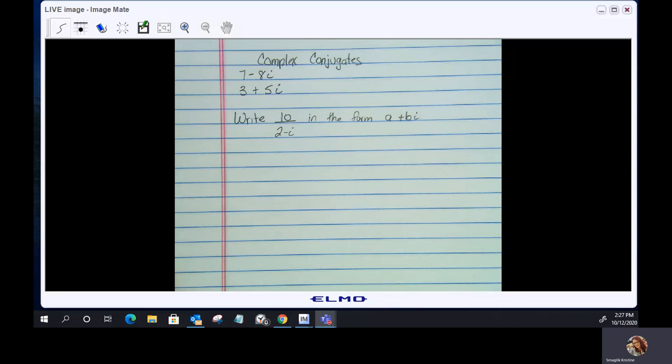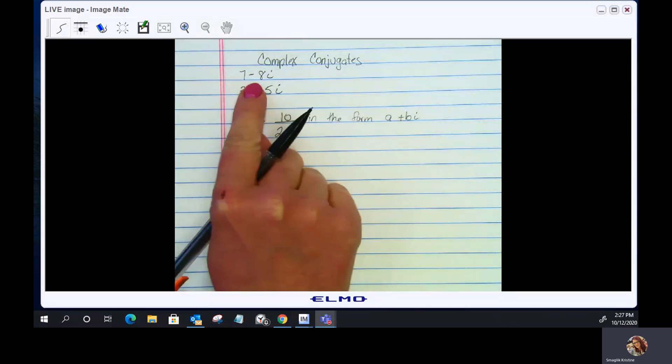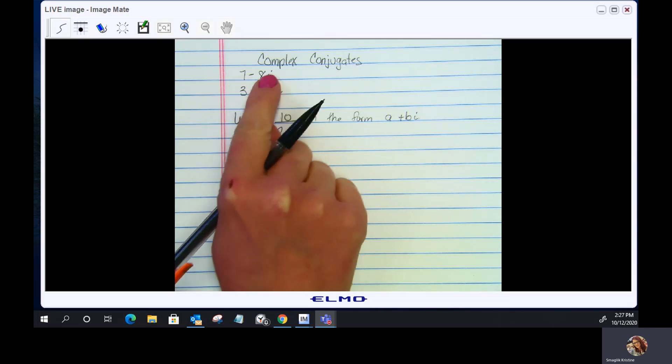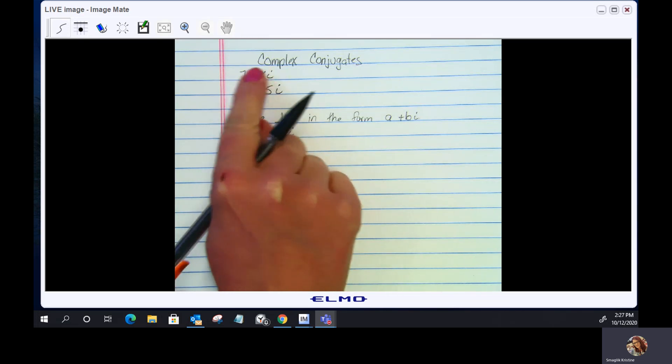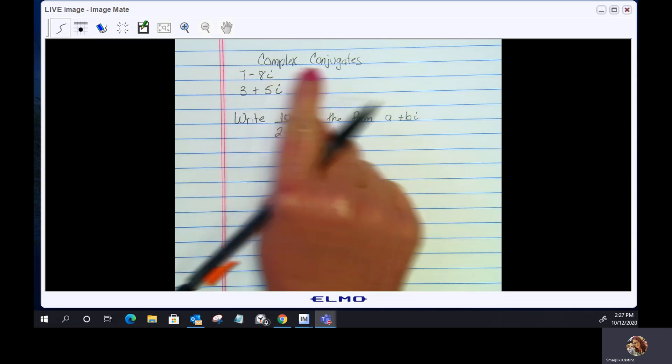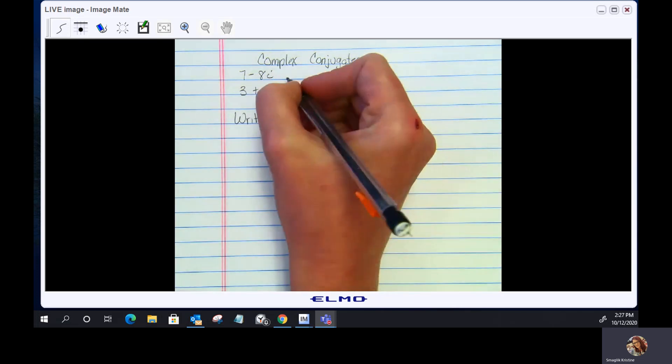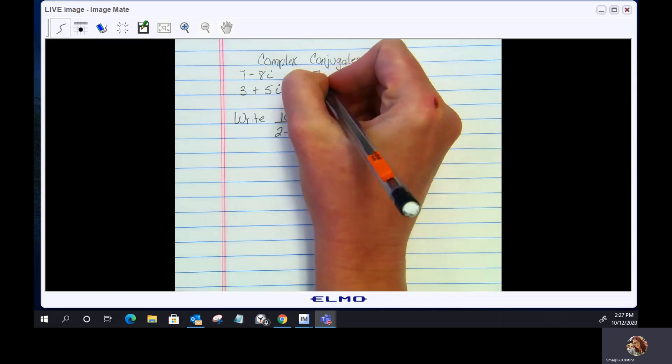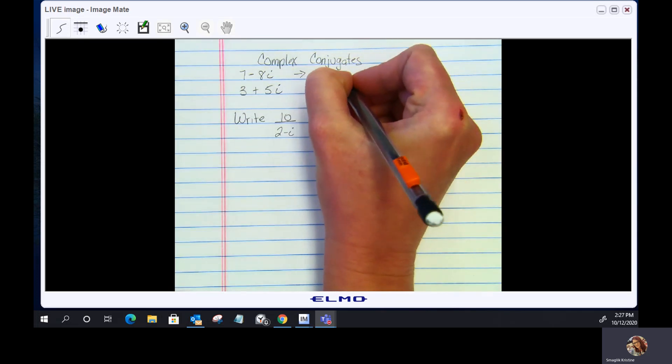Let's go over complex conjugates. All you need to do is take your original term, keep the two terms the same, and switch the sign. The complex conjugate of 7 minus 8i is 7 plus 8i.